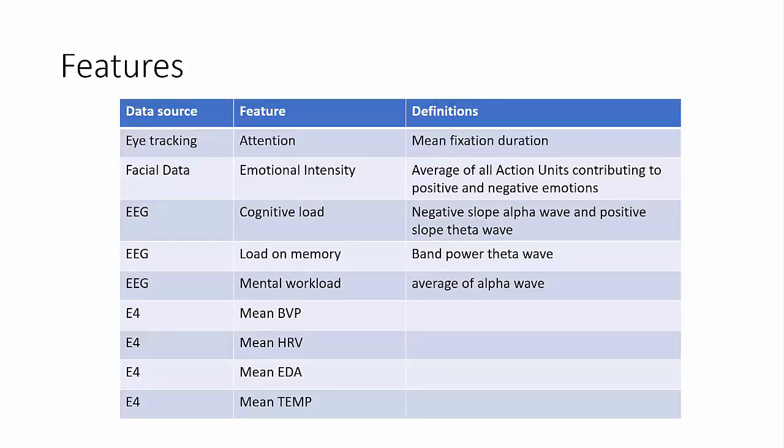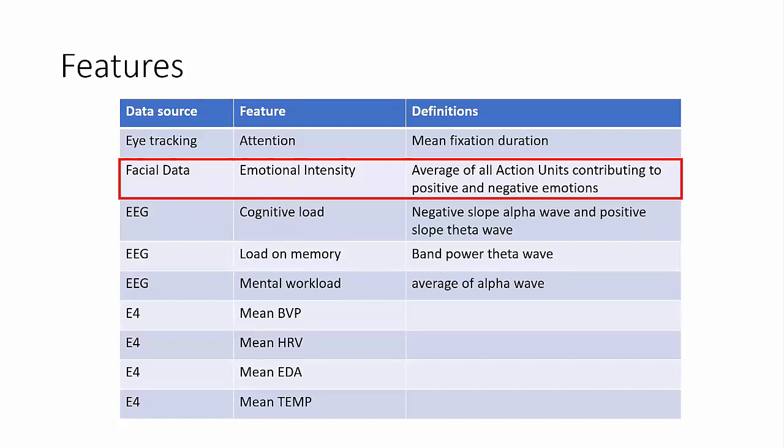Once we have cleaned the data, everything was synchronized with one computer's clock. So there was no additional step needed for synchronizing. And then we started extracting features from them. For example, we simply computed the mean fixation duration of each question for each participant. And we called it attention as it is commonly known to signify. From facial data, we computed emotional intensity. We did not compute given emotions. We computed the action units first, how the muscles on the face move. And we see if they contributed to a positive emotion or a negative emotion and averaged all these action units. We need to see at what intensity you show these emotions.